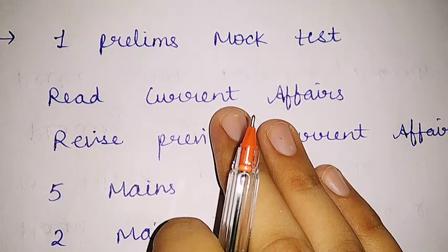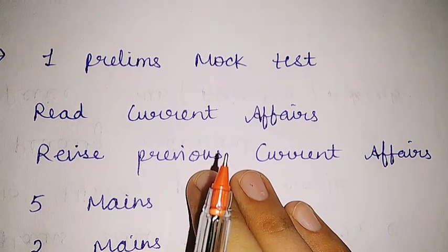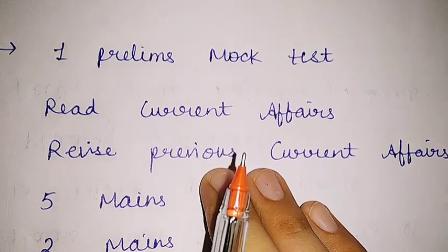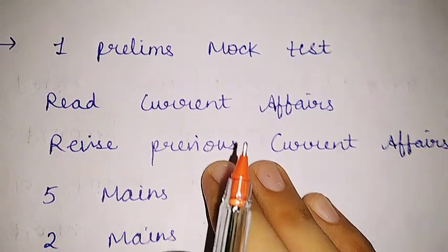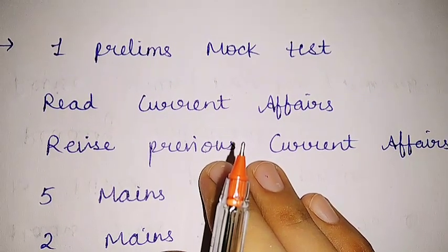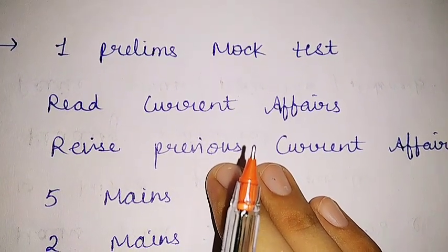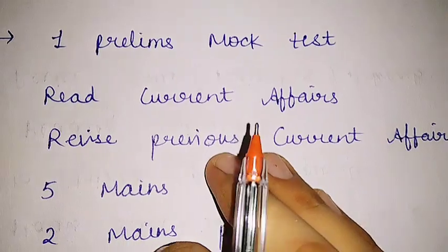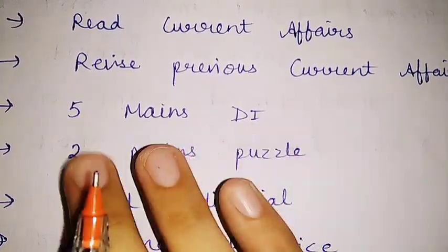from Affairs Cloud. It provides quizzes of the same PDF which you read, so there is a high possibility that you will remember the current affairs for a long time if you attempt the quizzes. For the Affairs Cloud current affairs subscription, I will give you the link in the description, and by using my code, you will get an extra 10% discount. Now there are five mains level DIs and two mains